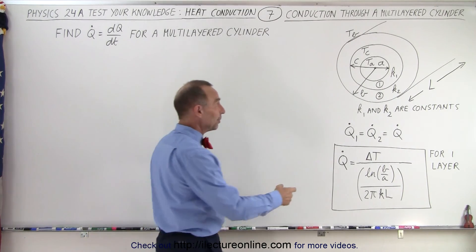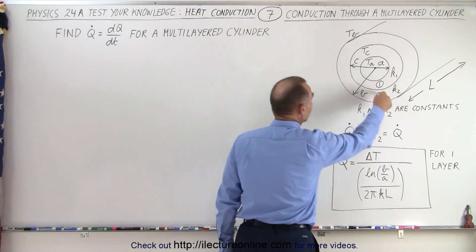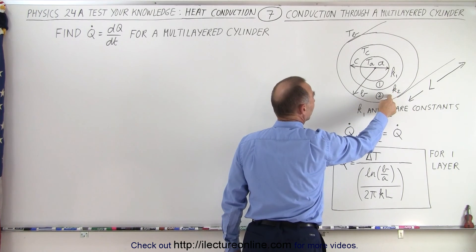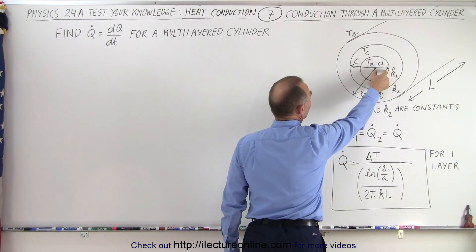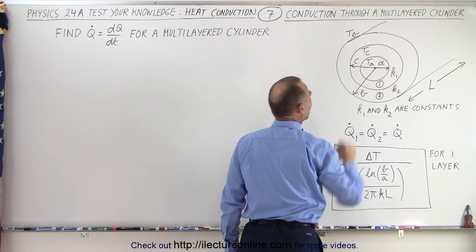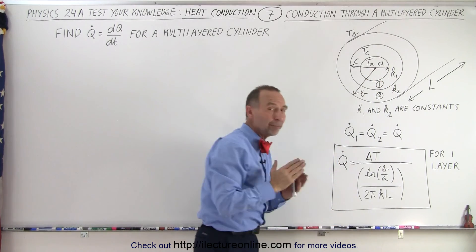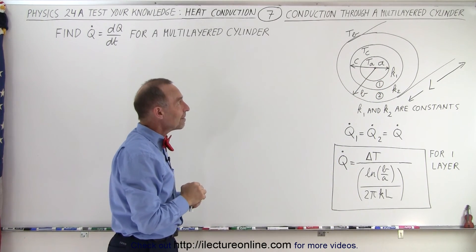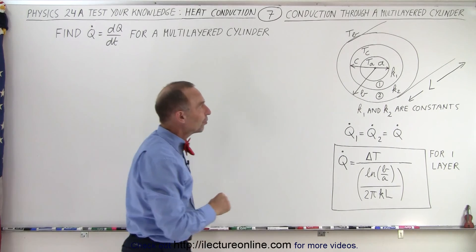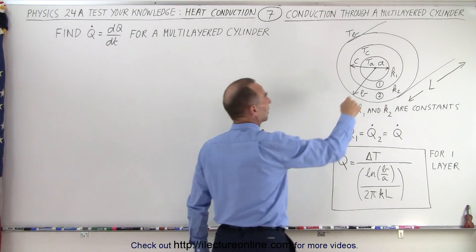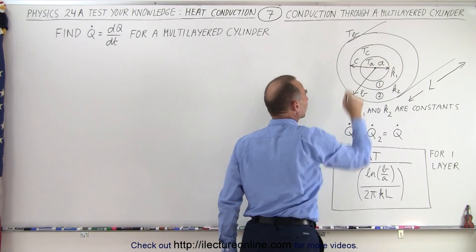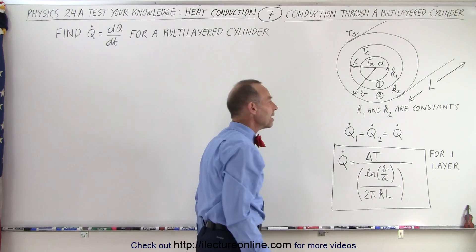For this example, we have a cylinder that has two layers. Each layer has its own heat conductivity constant, K1 and K2. The inner radius is A, the outer radius is B, and the boundary between the two layers has radius C. We have a temperature inside TA, on the outside TB, and at the boundary TC.